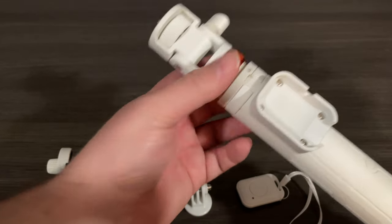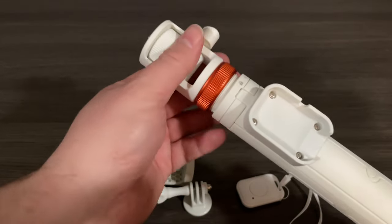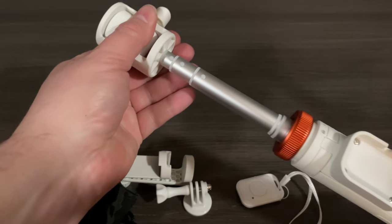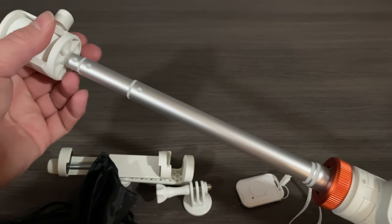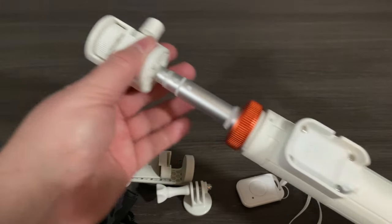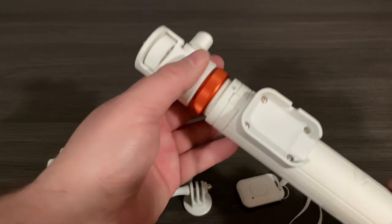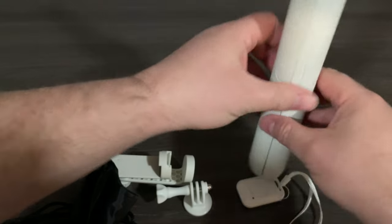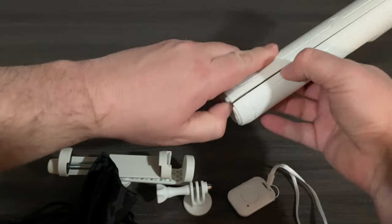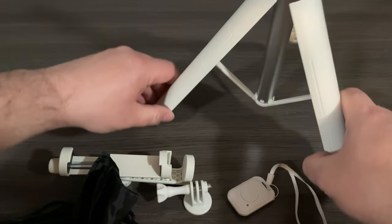We've got an adjustment screw that's going to either tighten or loosen. Once we loosen that up, we can start to pull the stand apart. Like I said, this is going to go as far as 62 inches if it's standing on the floor with the tripod legs that you expect from a stand like this.